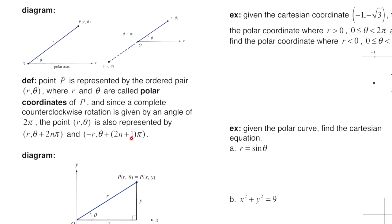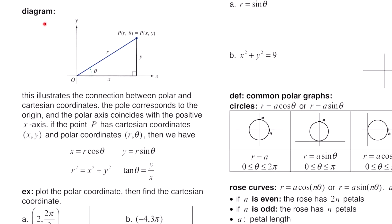Or negative r, theta plus (2n+1)π. Next, this diagram illustrates the connection between polar and Cartesian coordinates. The pole corresponds to the origin, and the polar axis coincides with the positive x-axis. If the point P has Cartesian coordinates x, y — you can see this point is x, y — you can also refer to P as having polar coordinates r, theta.